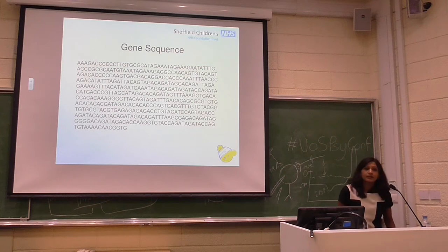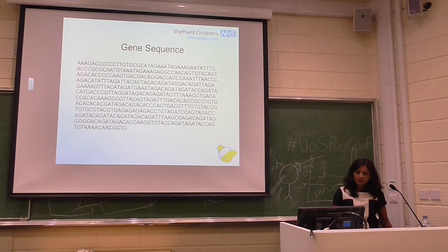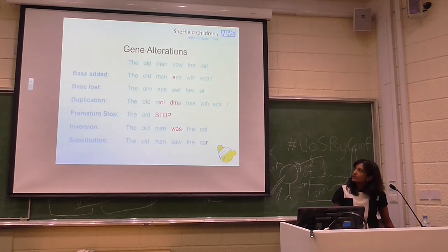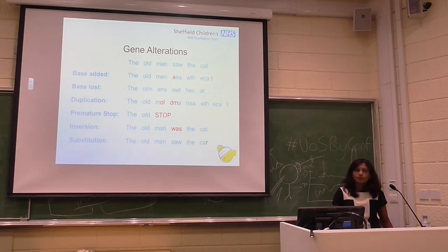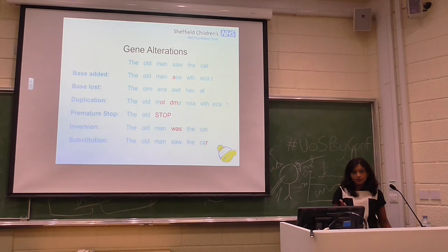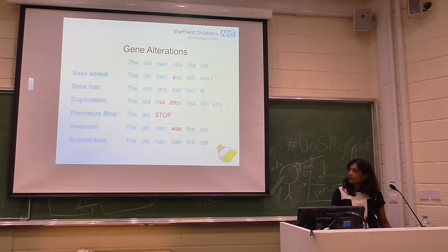Going back to the gene sequence: it's read three bases at a time. Here's a very simple instruction: 'the old man saw the cat.' That's well understood. But what happens if there is an alteration? If a base is added, if a base is lost, if it's duplicated, if the stop codon is introduced quite prematurely, if there's an inversion or a substitution — all of these change the instruction. So this is all it takes, in some sense, to cause a phenotype.